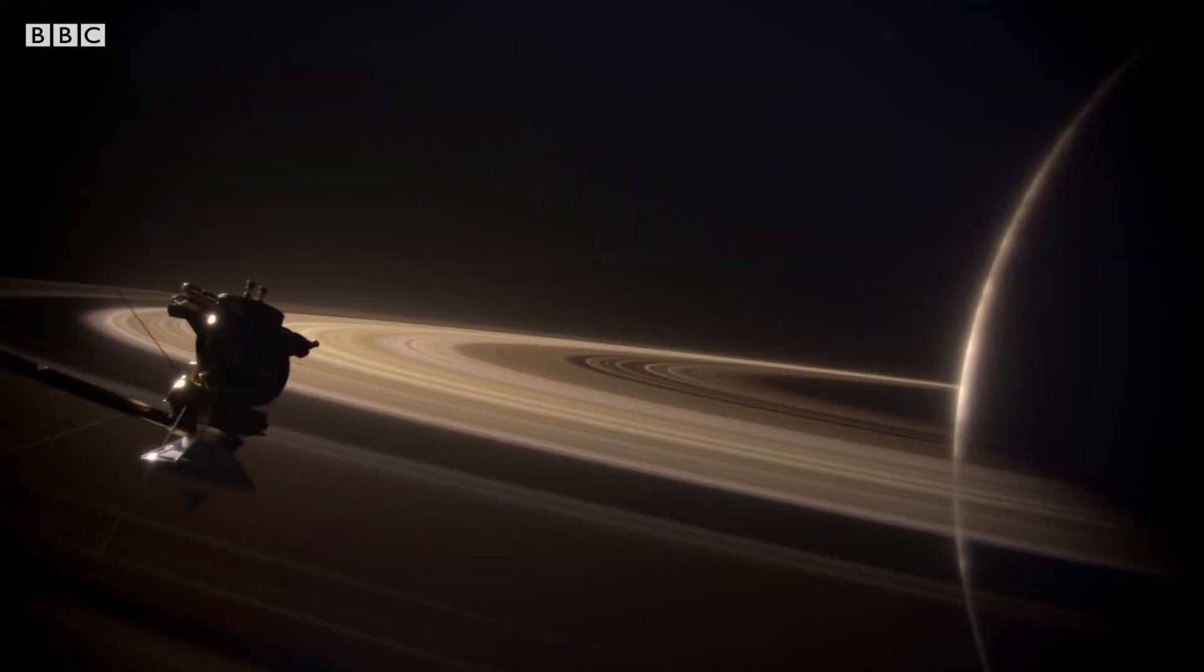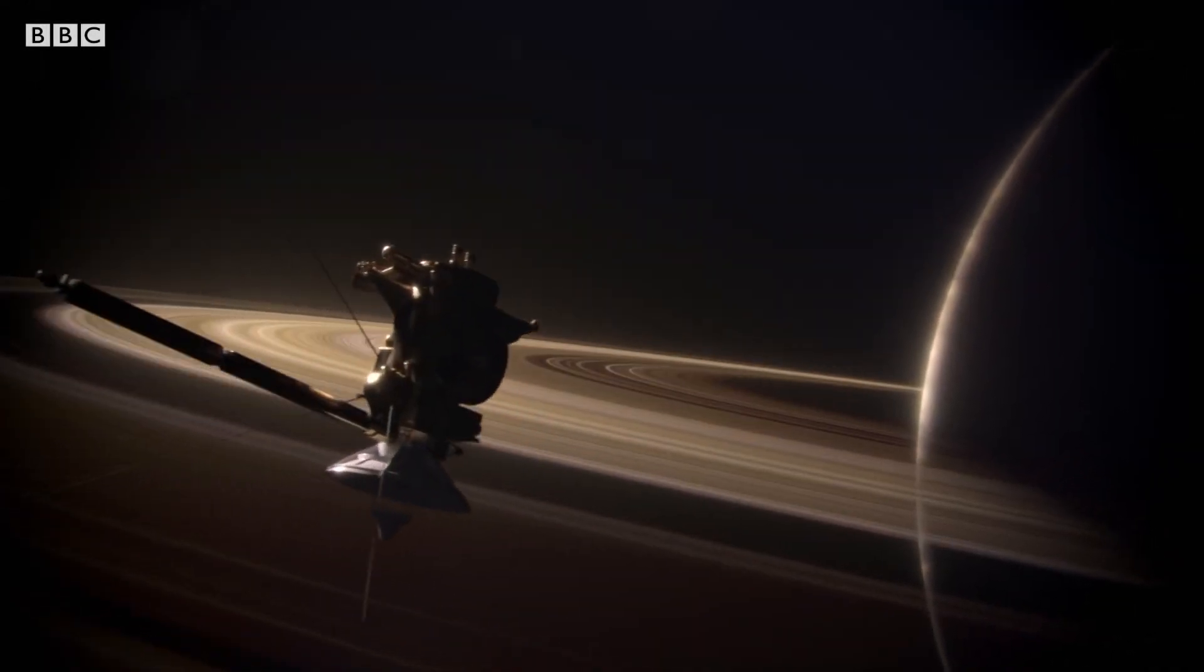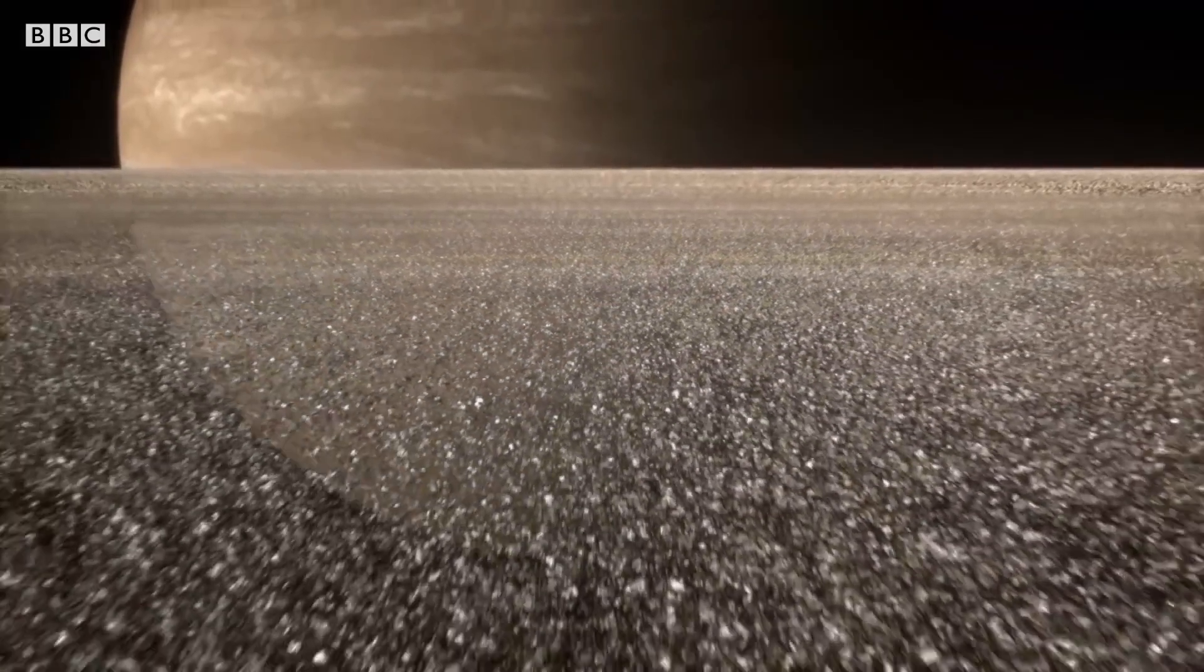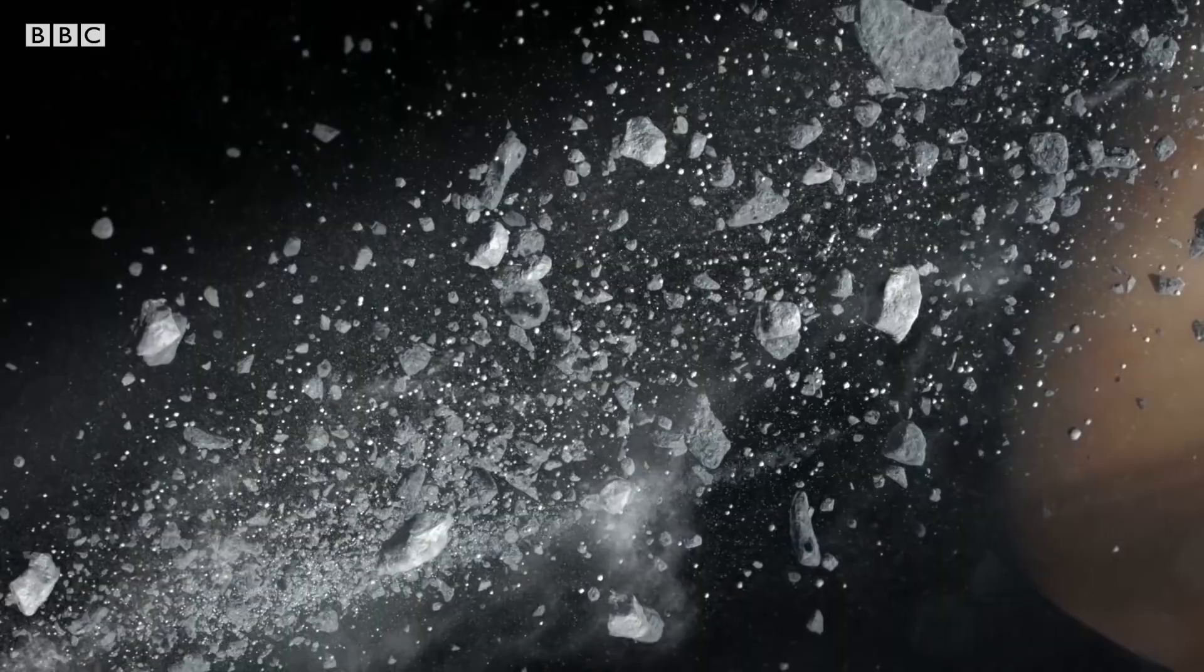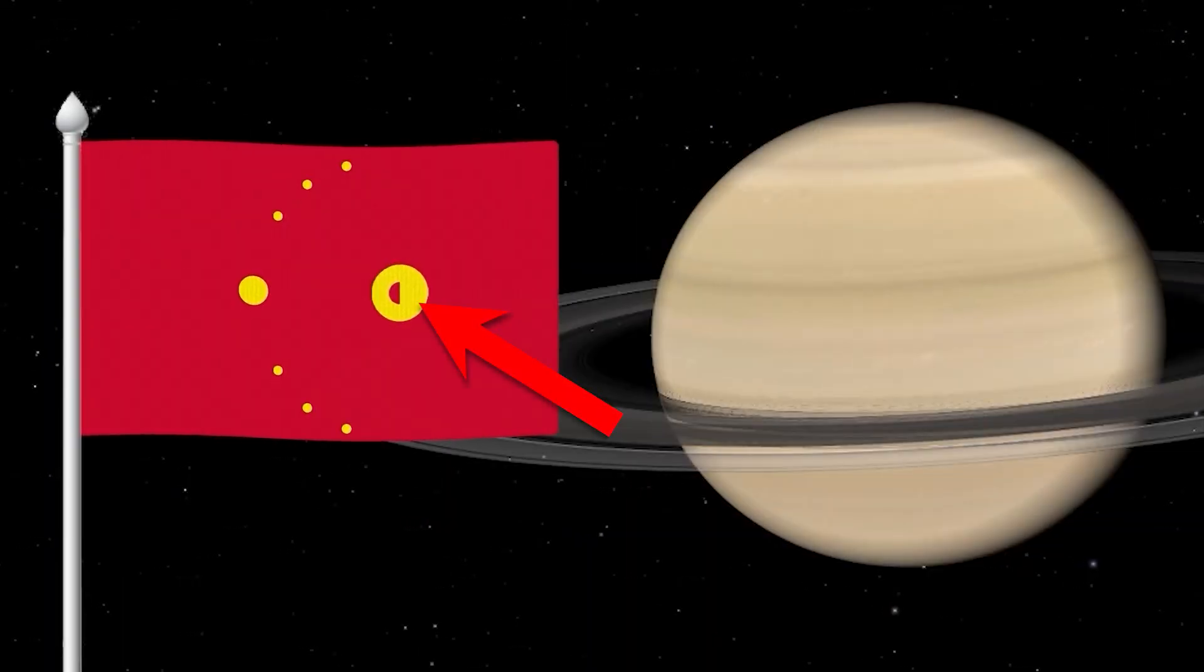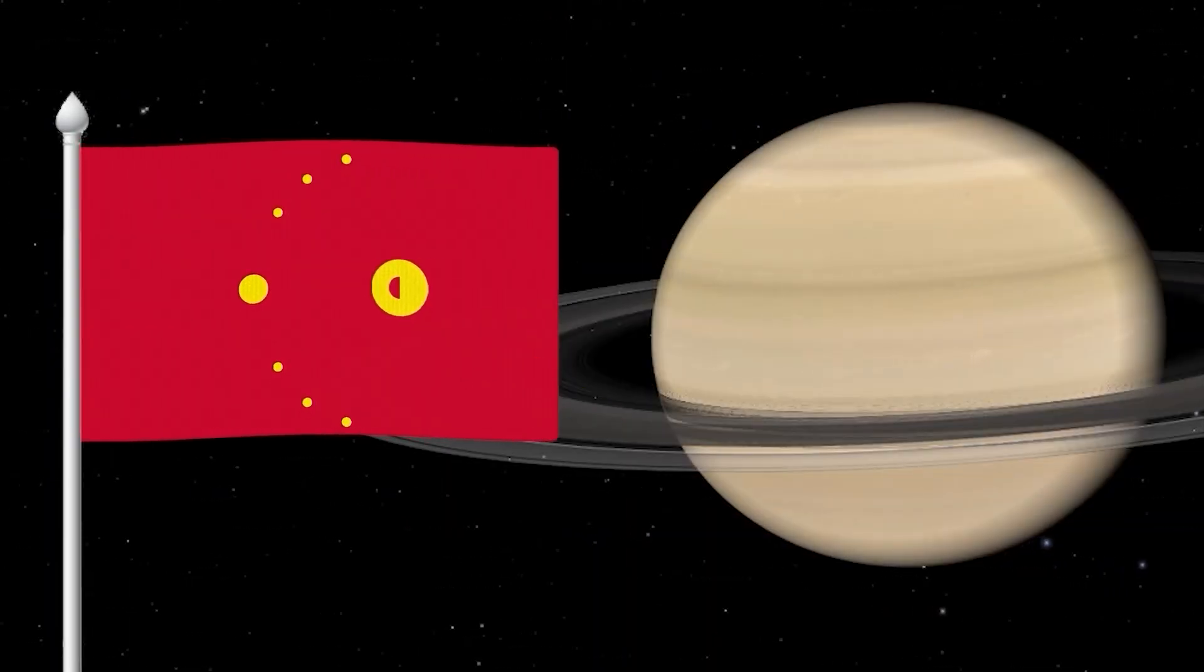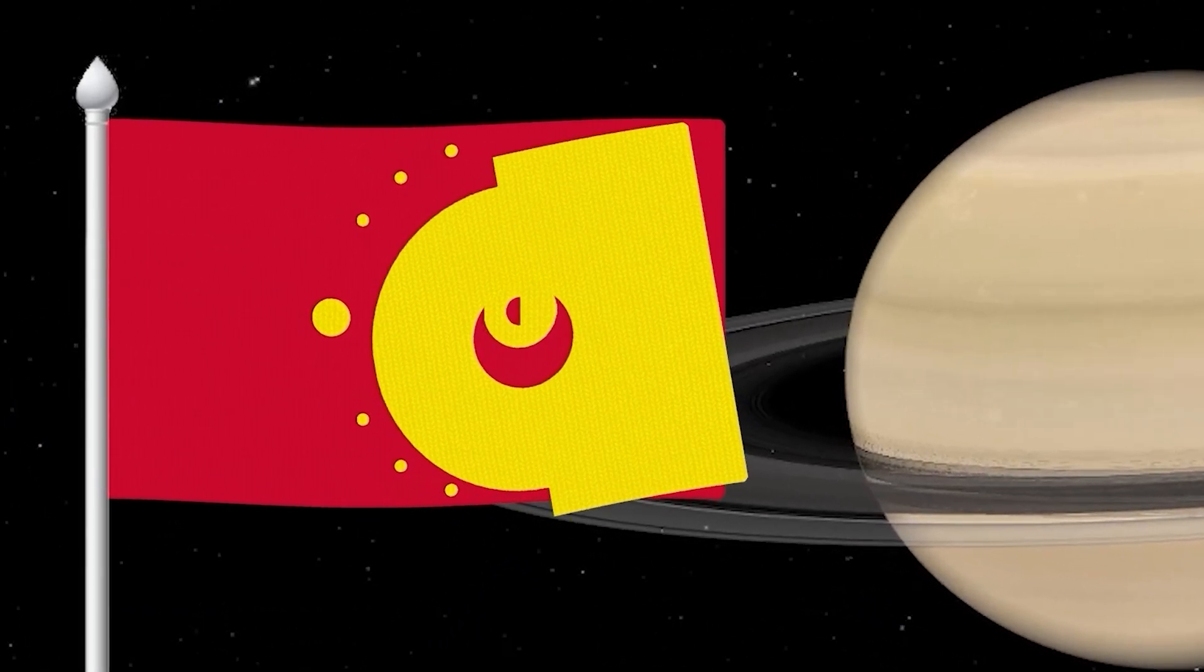Saturn has the most extensive and complex ring system in the solar system. It is composed of countless individual pieces of ice and rock, ranging in size from tiny grains of dust to large boulders. So let's picture the ring on the flag. And in the center of the ring itself will be a yellow Saturn circle.